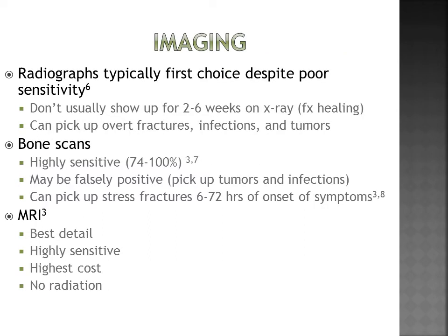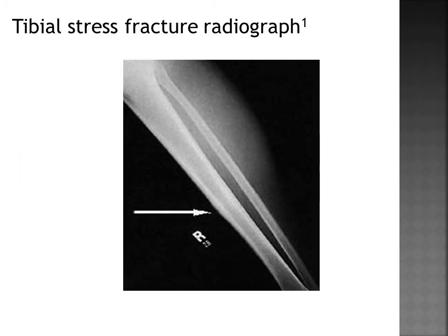If your initial evaluation leads you to suspect a stress fracture, you should refer for imaging. Bone scans and MRIs are the best diagnostic tools, as they are both highly sensitive — bone scans have a sensitivity of nearly 100%, and MRIs are comparable. MRIs are higher cost but do not emit radiation. Radiographs are difficult to use, as Moran et al. noted that 85% of stress fractures are missed the first time and 50% the second time through radiograph.